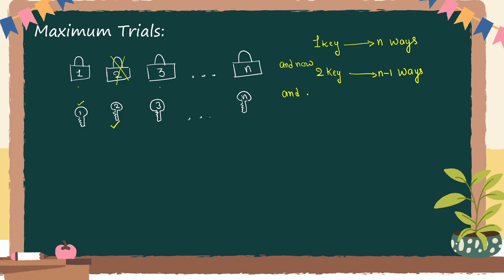For the third key, the third key would have n minus two locks left, so in the worst case I have to try n minus two locks — n minus two ways. Similarly going further, for the last key I would have only one lock left, so it is one way.